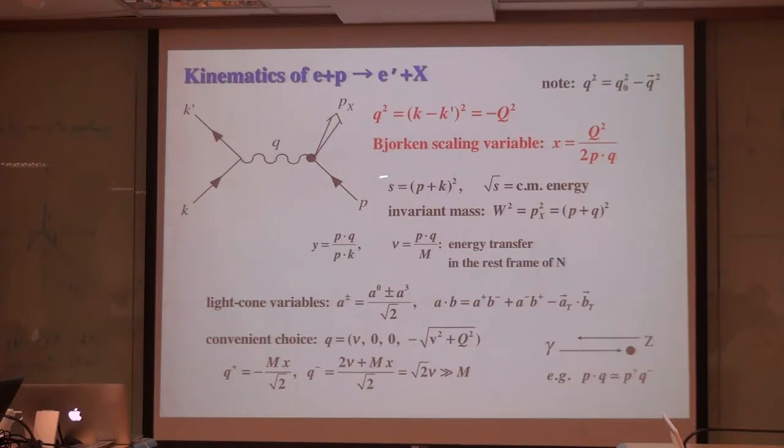Q is the four-momentum transfer for the photon. Since this is a negative quantity, we usually use minus Q-square for describing positive quantities. In my notation, Q-square is Q zero component squared minus vector component squared. If you read old books, this sign is opposite, so please be careful.